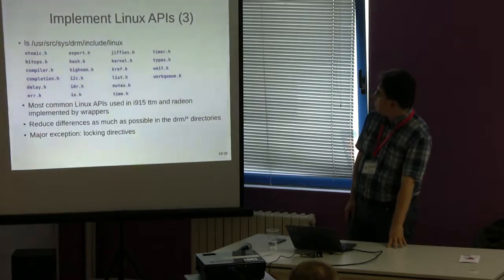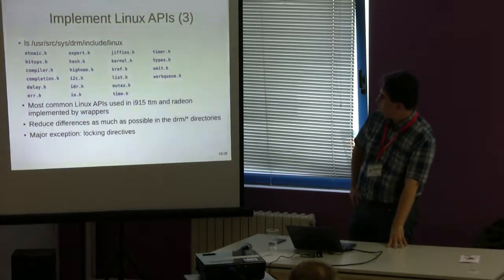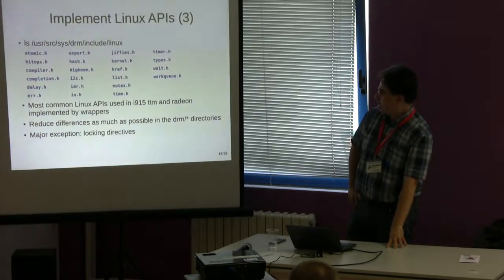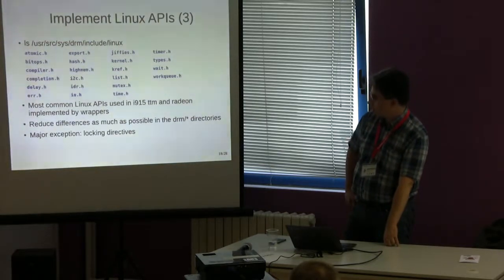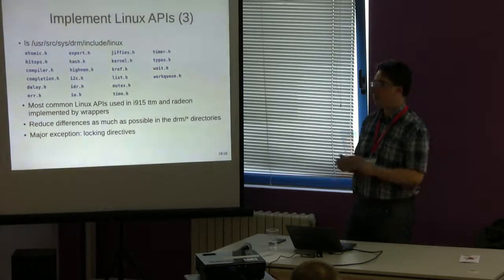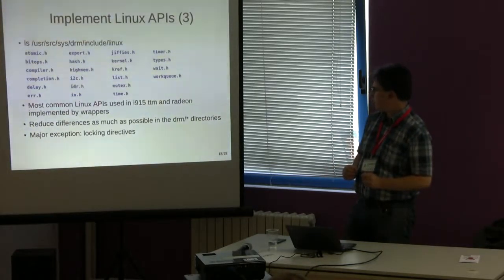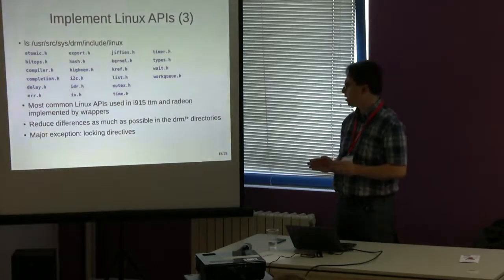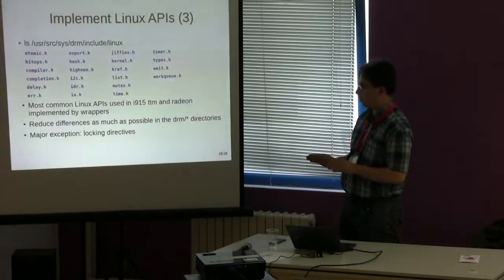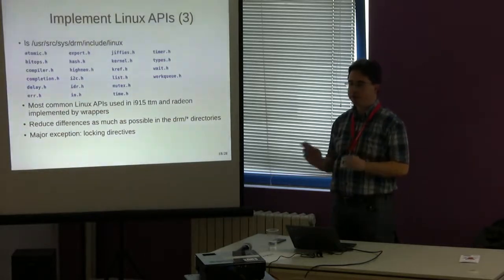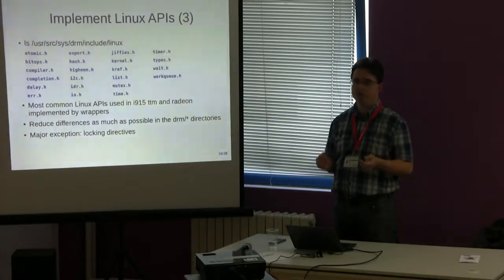We have many included Linux header files which are just wrappers to existing DragonFly BSD APIs or generic BSD APIs. They are used by i915, Radeon, and TTM, and they really help to reduce the difference compared to Linux. I didn't use them everywhere, though. In particular, I kept the locking directives completely separate and specific to DragonFly, because I wanted to make it obvious that kernel subsystems work differently in FreeBSD, DragonFly, and Linux.